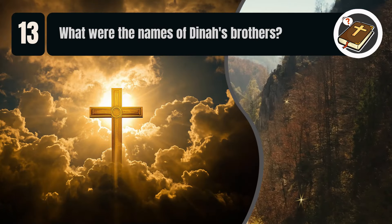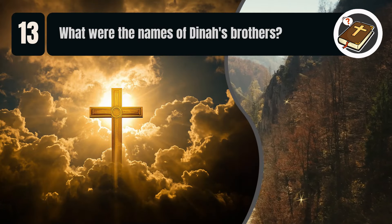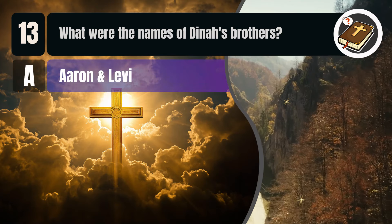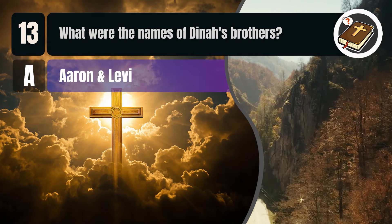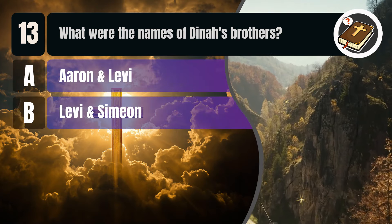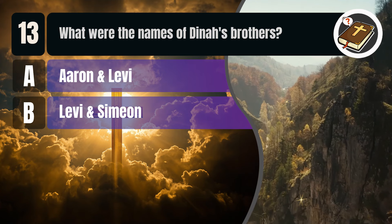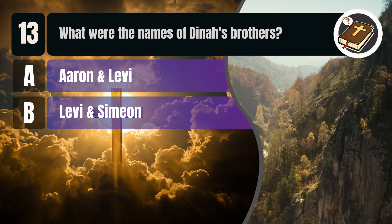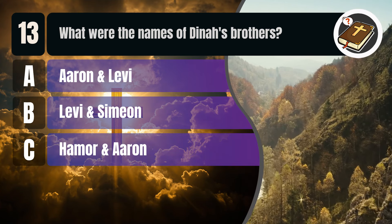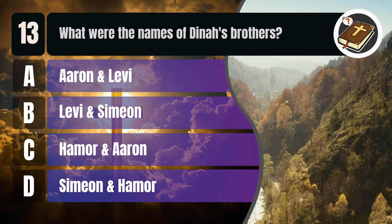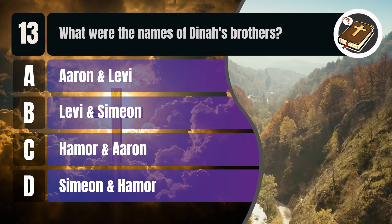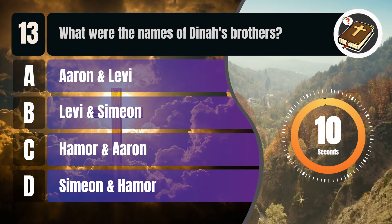Question 13. What were the names of Dinah's brothers? A. Aaron and Levi. B. Levi and Simeon. C. Hammer and Aaron. D. Simeon and Hammer.